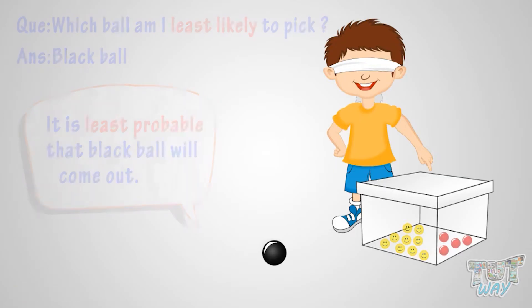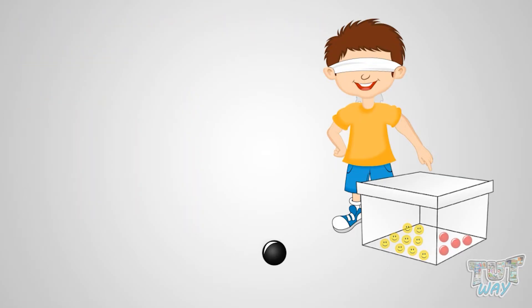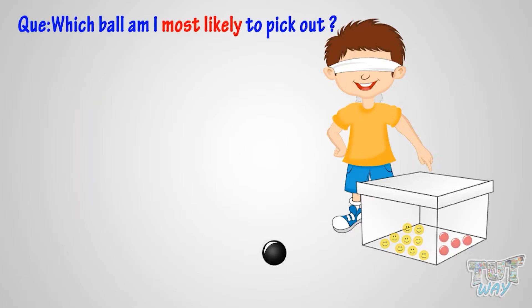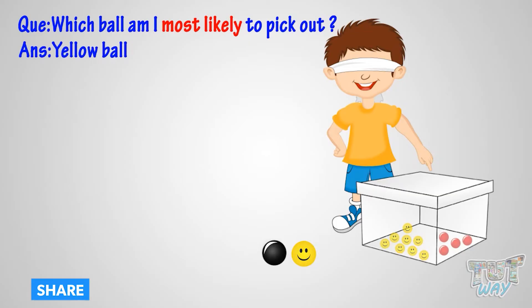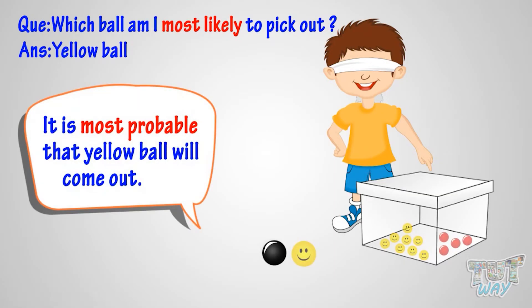Now, if I pick out any one ball from the box without looking into the box, which ball am I most likely to pick? Most likely, the yellow ball! Because most number of balls in the box are yellow. So it's most likely that if I pick one ball from the box it will be a yellow ball — it is most probable that the yellow ball will come out.